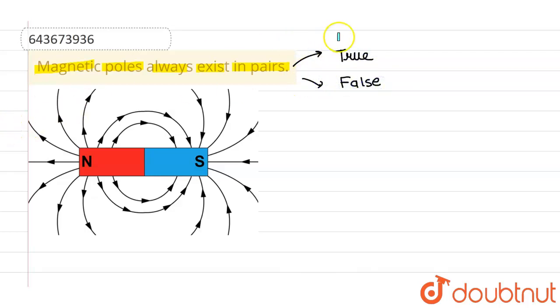Now why is this a true statement? Because, since we know that there are two poles of a magnet, and we know that from north pole, the magnetic field lines emerge out from north pole.